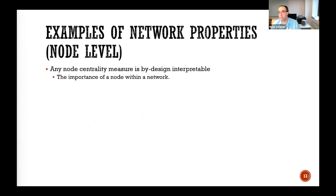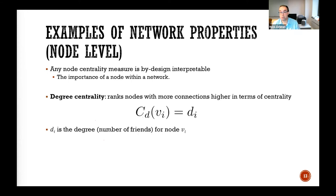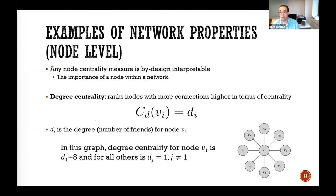When representing any node in a graph, you can use any centrality measure, because centrality measures usually have a meaning — there's a reason people came up with them. For example, a node is important when it has more connections, so the centrality for node Vi is its degree Di. In this example, the center node is the most important with degree eight.